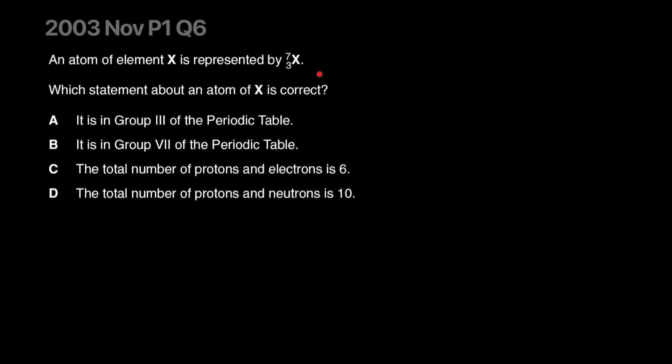An atom of element X is represented by this thing. I think they're talking about lithium because it has three protons, looking at the periodic table. This is so easily solved if you just look at the periodic table. This is just lithium. Which statement is correct? It's in group three of the periodic table because they want you to think it has three protons, so it must be in group three. Actually, no. It's about the valence electrons. There's only one electron in its outermost shell, so it's in group one.